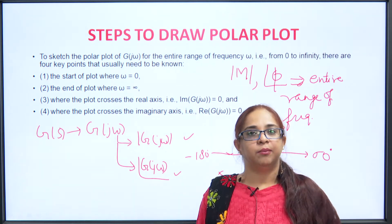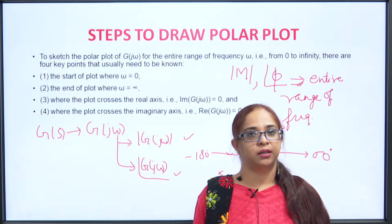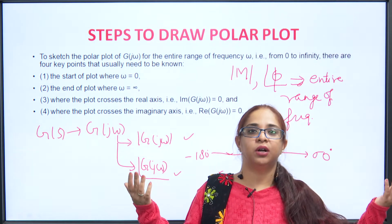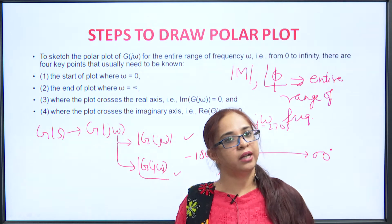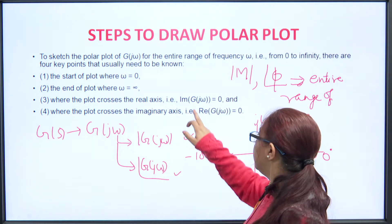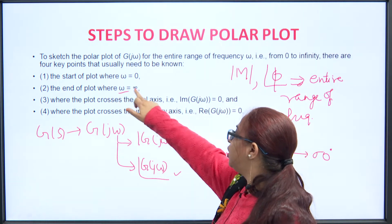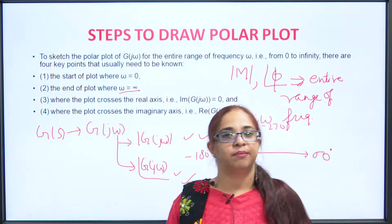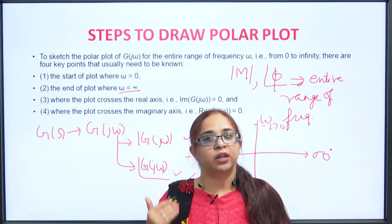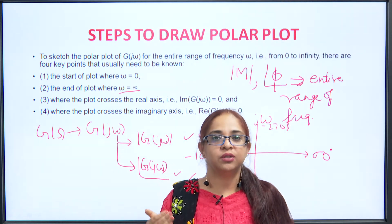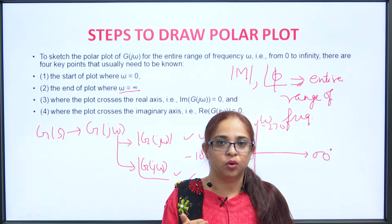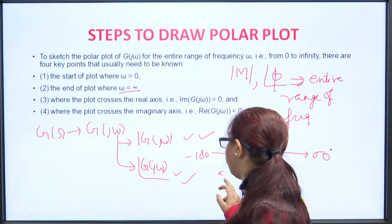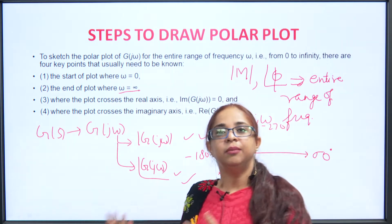The second thing is the ending point. The ending point of the frequency is infinite, since we need the entire range. So what we will do is substitute omega equal to infinity in both magnitude and angle, obtain the magnitude and angle at omega equal to infinity, and mark that as the point where the plot is terminating.